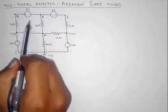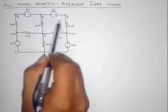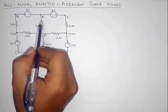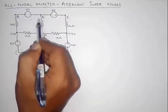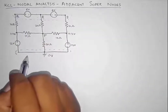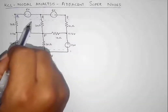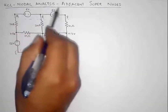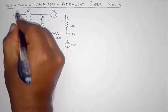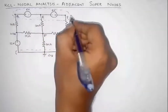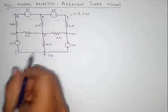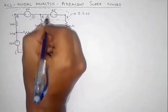This node is a super node, and this whole node is also a super node, and both of these are attached to each other at this point — these two super nodes are adjacent to each other. So instead of treating both as separate super nodes, we are going to consider this whole as a single super node, and we are going to call this a 'super super node' or SS node. We will call one super node as SN1 and the other as SN2.